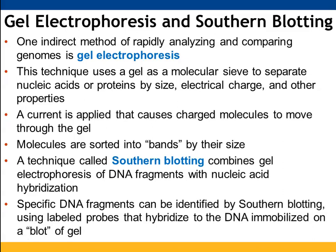An electrical current causes negatively charged DNA molecules to move through the gel. Larger DNA molecules get stuck in the agarose or acrylamide gel, while smaller ones move further toward the positive end of the charge. This assorts DNA pieces — or proteins — roughly by size. Southern blotting takes advantage of nucleic acid hybridization and separates gel fragments by size to identify specific pieces of DNA.